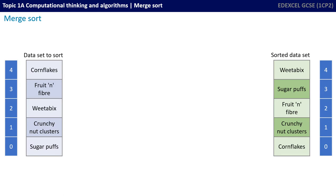Here's a dataset of breakfast cereals. The original data to sort is shown on the left, and the sorted data that we're trying to achieve is shown in green on the right. The object is to put them in alphabetical order with the lowest one at the bottom — so cornflakes, crunchnut clusters, fruit and fibre, sugar puffs, and Weetabix at the top. We're now going to go through the steps of the algorithm to see if we can get to the sorted dataset.